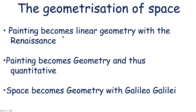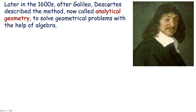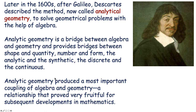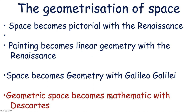So: painting became linear geometry with the Renaissance; painting became geometry and thus quantitative; space became geometry with Galileo Galilei — coming from painting and art to the very beginning of science. Later, in the 1600s, after Galileo, Descartes described the method now called analytical geometry — to solve geometrical problems with the help of algebra. He merged geometry and algebra. Analytical geometry is a bridge between algebra and geometry, providing bridges between shape and quantity, number and form, the analytical and the synthetic, the discrete and the continuous — the two aspects of our way of looking quantitatively at the universe. This proved very fruitful for subsequent development in mathematics.